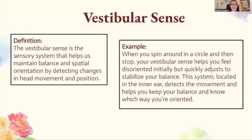The vestibular sense is a sensory system that helps us maintain balance and spatial orientation by detecting changes in head movement and position. When you spin around in a circle and then stop, your vestibular sense helps you feel disoriented initially but quickly adjusts to stabilize your balance. This system, located in your inner ear, detects movement and helps you keep your balance and know which way you're oriented.